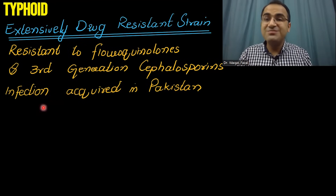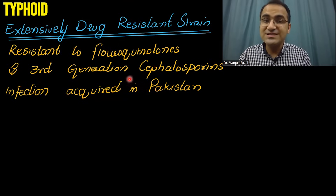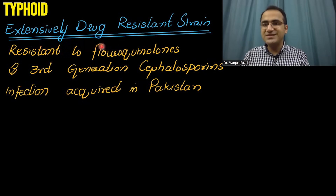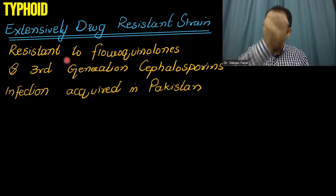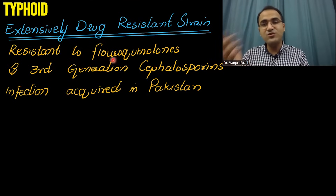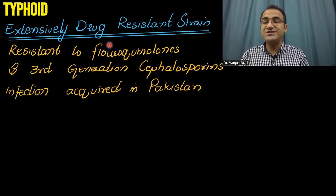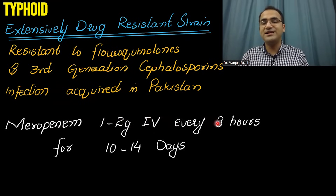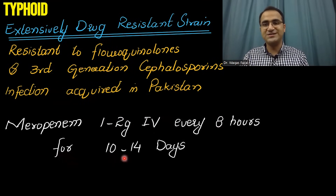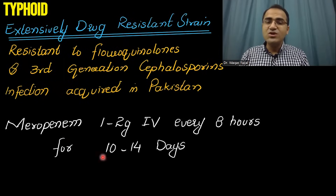There are some strains present in Pakistan which are extensively drug resistant — resistant to fluoroquinolones and also to ceftriaxone and third-generation cephalosporins. For these patients, you can use meropenem 1–2 g IV every 8 hours for 10–14 days.